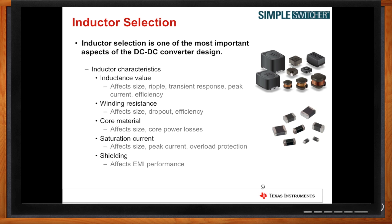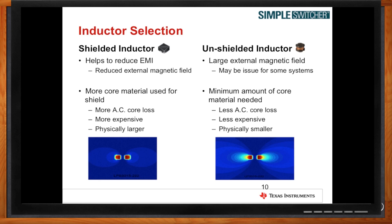Tell me about the shielding. You have two types of inductors: shielded and unshielded. The benefit of a shielded inductor is that it helps to reduce EMI. At the bottom here you see two different images — the one on the left shows the magnetic field of a shielded inductor, and the one on the right shows an unshielded inductor. As you can see, the magnetic field of the unshielded inductor is a lot larger, which means more noise. If you have a noise-sensitive solution, you may want to consider a shielded inductor.